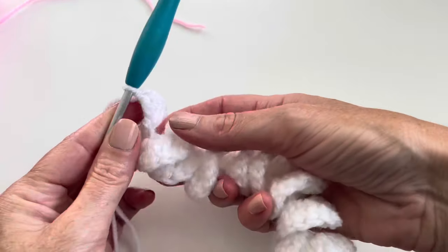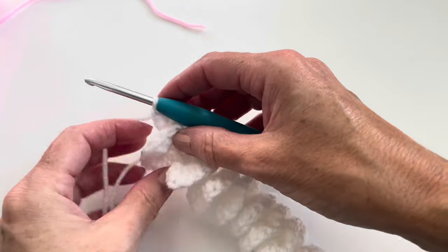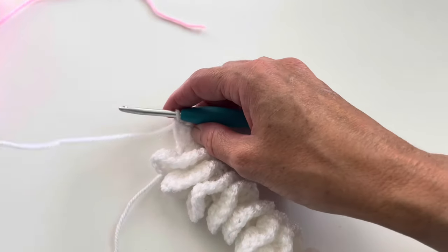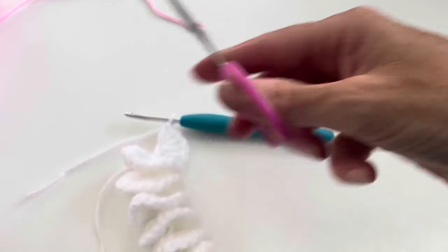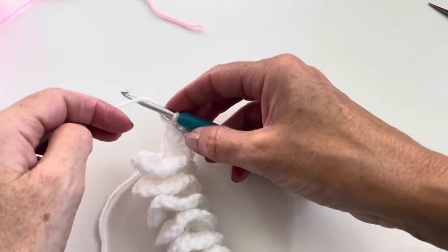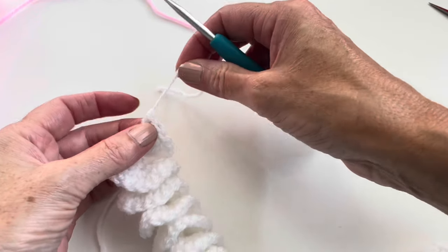I have to turn a little on the last row, and now I want to change a color. So I will cut my yarn, yarn over, and pull through.